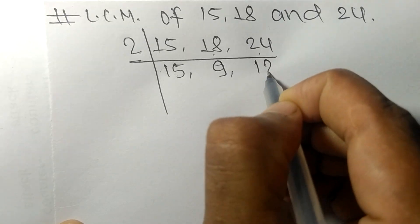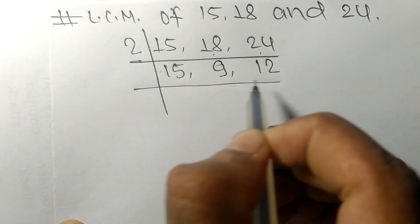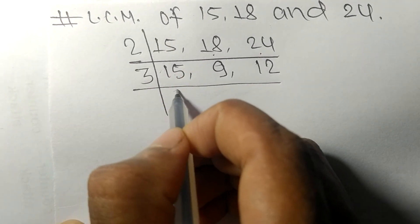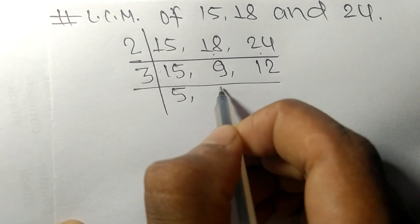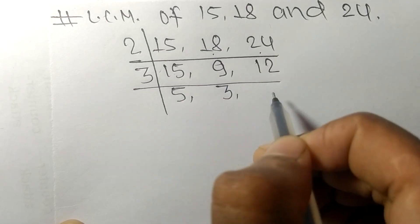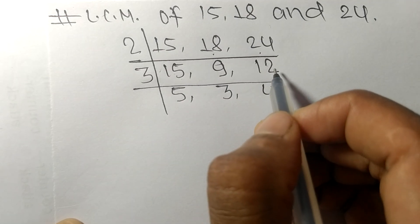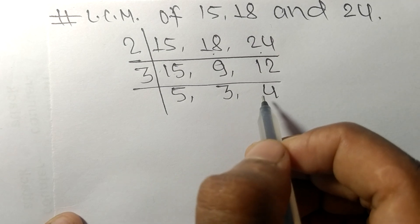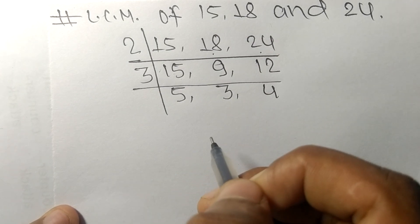Now these numbers are divisible by 3. 3 times 5 means 15, 3 times 3 means 9, 3 times 4 means 12. So now these numbers 5, 3, and 4 are not exactly divisible by the same number.